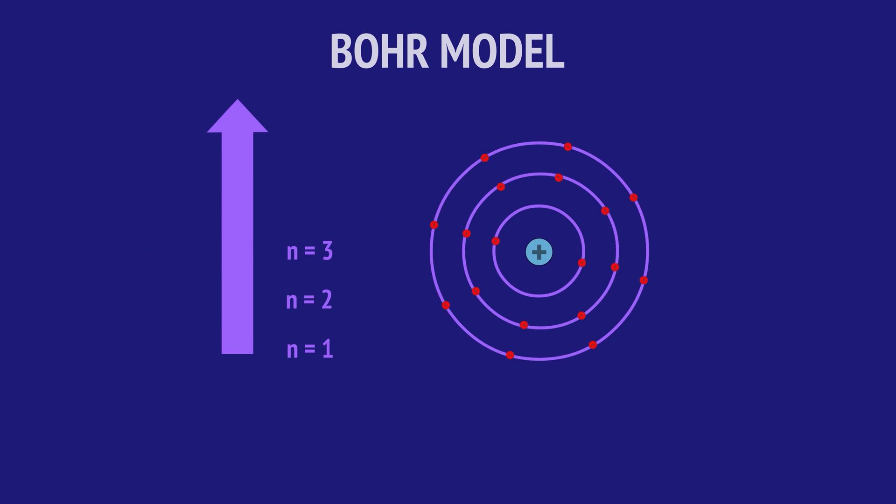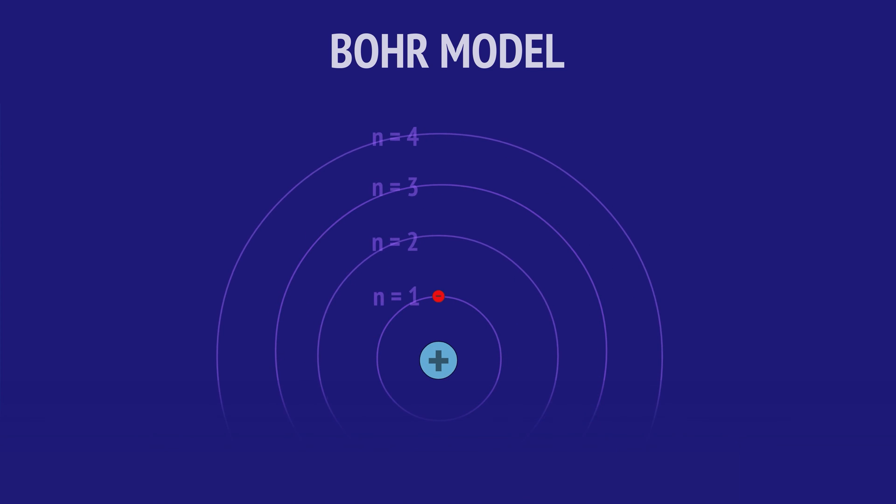And that these fixed orbits quantized the electron energies into energy levels, meaning that only discrete energies were allowed. Electrons could move between energy levels if they absorbed or emitted energy, but they could never occupy orbits and therefore energies between these fixed orbits.